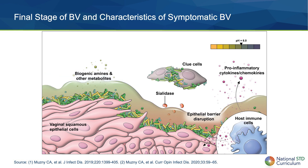In symptomatic BV, exfoliation of vaginal epithelial cells coated with polymicrobial biofilm occurs, and these cells, which are commonly referred to as clue cells, can be seen on a wet mount of vaginal secretions. Production of biogenic amines and metabolites increase the vaginal pH and may contribute to clinical symptoms, including a fishy vaginal odor and a clear to milky white vaginal discharge.